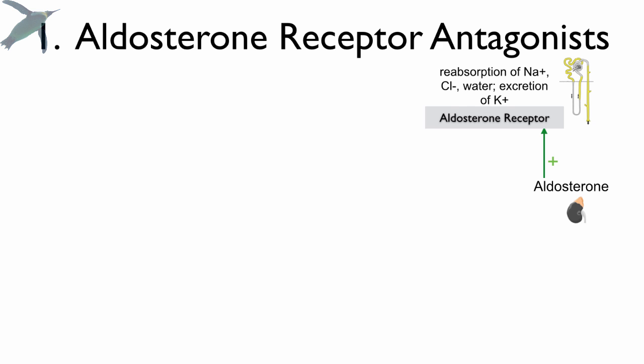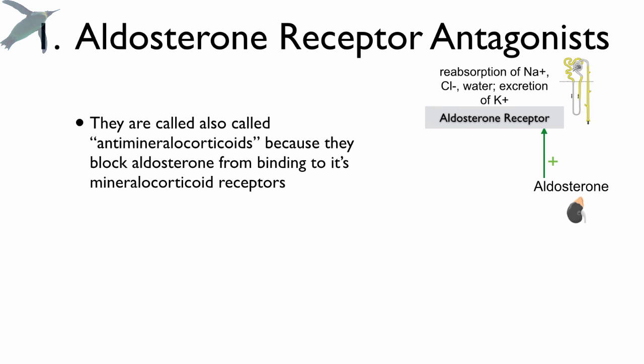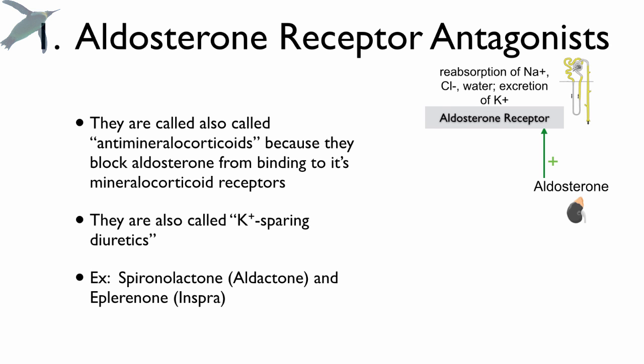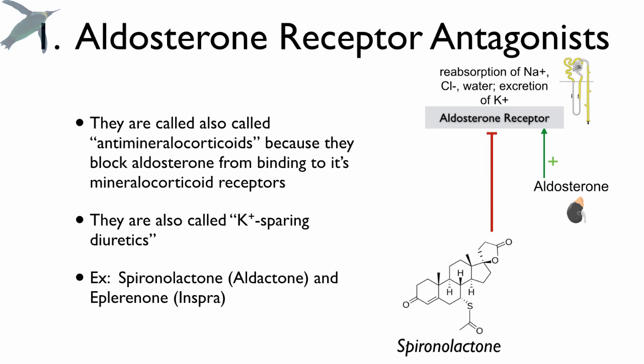Let's look first at the aldosterone receptor antagonists. Right away you should be able to tell what these things are going to do. You may see them as anti-mineralocorticoids — aldosterone is called a mineralocorticoid, and sometimes the receptors are referred to as mineralocorticoid receptors. These are intracellular receptors because aldosterone is a steroid. They are called potassium-sparing diuretics. For example, spironolactone — the most common one — is an antagonist that blocks aldosterone from binding to those receptors, preventing aldosterone from causing its effects.